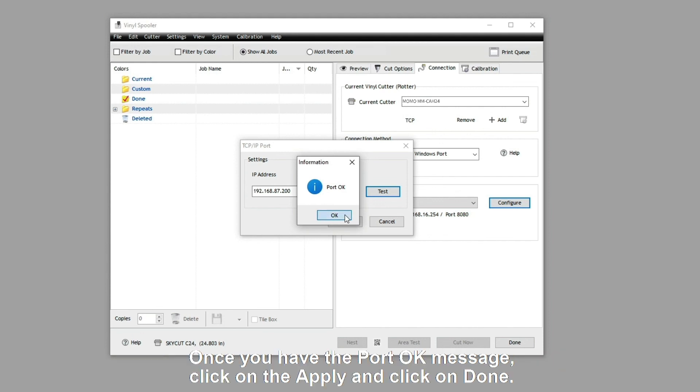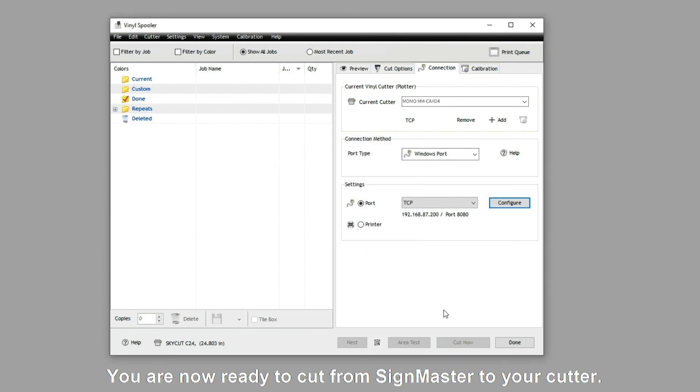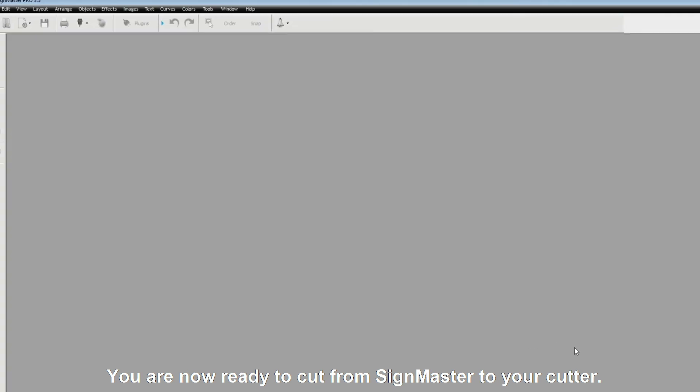Once you have the Port OK message, click on the Apply and click on Done. You are now ready to cut from Sign Master to your cutter.